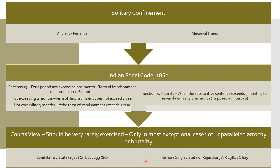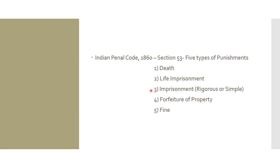Moving on to the last slide: Section 53 of the Indian Penal Code 1860 provides five types of punishments — death, life imprisonment, imprisonment (rigorous or simple), forfeiture of property, and fine. We have already covered fines, forfeiture of property, imprisonment, and solitary confinement. Life imprisonment and capital punishment (death sentence) will be taken up in the next video. I hope all of you are taking very good care of yourselves and your family members. Keep on studying, all the very best for your exams, and God bless you all. Thank you so very much for listening. Bye.